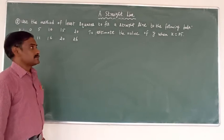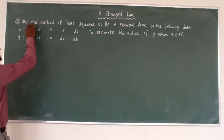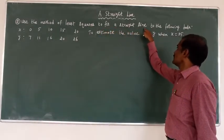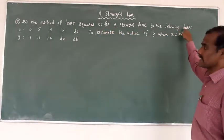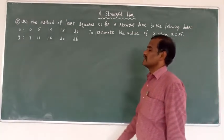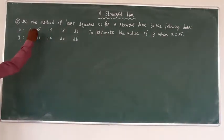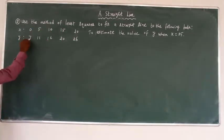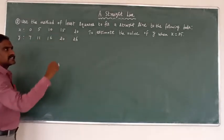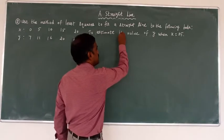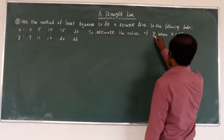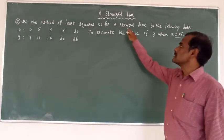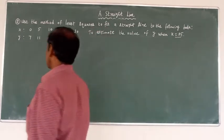Second sum: use the method of least squares to fit a straight line to the following data. Given X values: 0, 5, 10, 15, 20, and corresponding Y values: 7, 11, 16, 20, 26. Now estimate the value of Y when X is equal to 25, using a straight line.